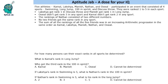Hello everyone, welcome to Aptitude Jam. This problem states that there are 5 athletes who participated in an event consisting of 4 sports: swimming, long jump, 100m sprint, and discus throw. They were ranked 1 to 5 in each sport, and some information is given to us. Using that, we need to find out their ranks in different sports.